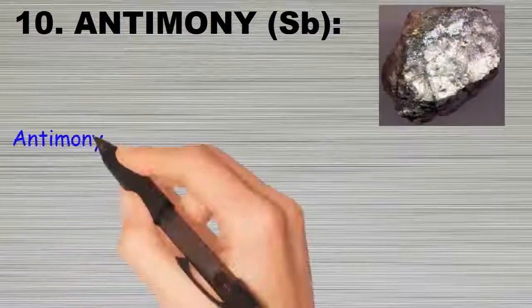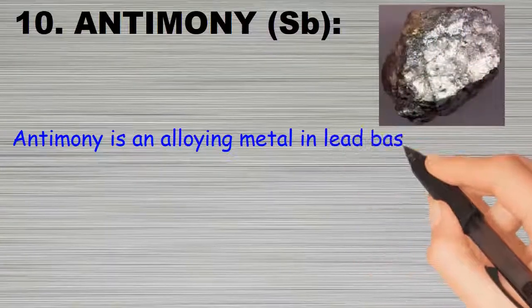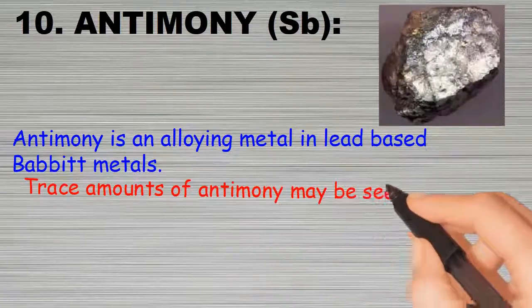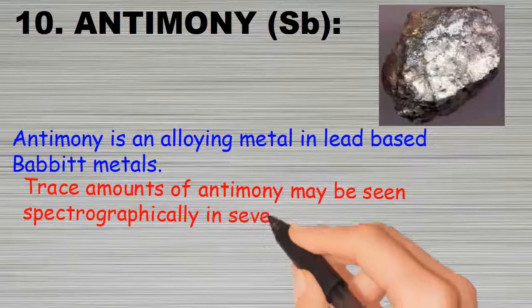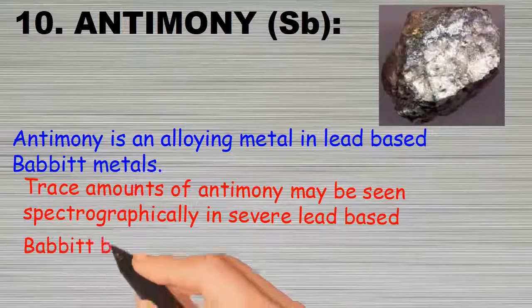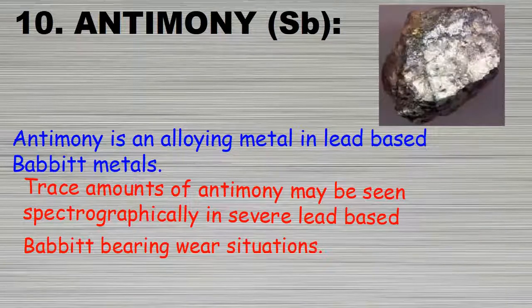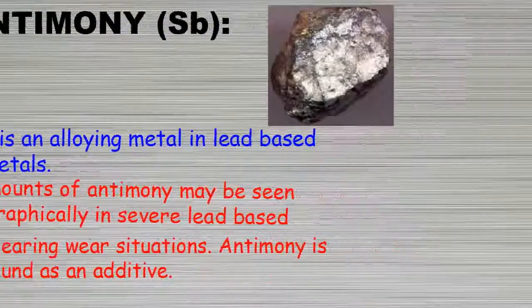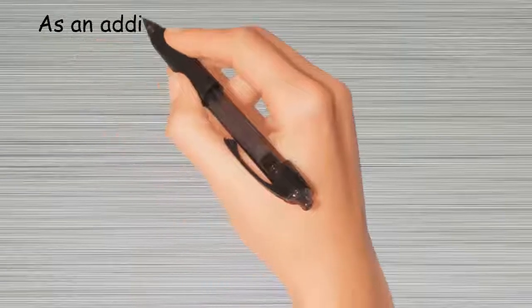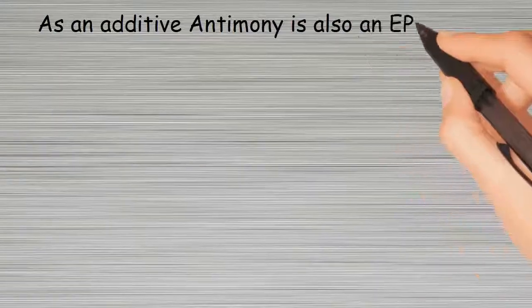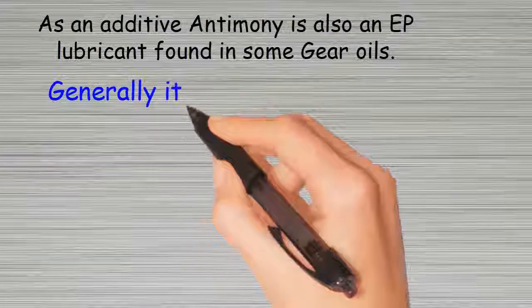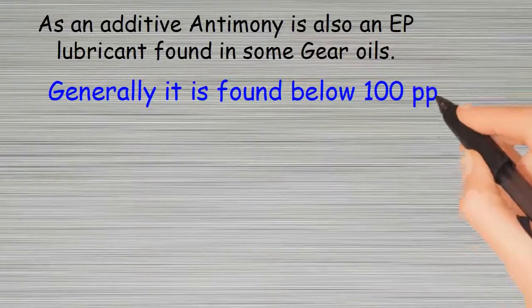Antimony (Sb). Antimony is an alloying metal in lead-based Babbitt metals. Trace amounts of antimony may be seen spectrographically in severe lead-based Babbitt bearing wear situations. Antimony is usually found as an additive; as an additive, antimony is also an EP lubricant found in some gear oils, and is generally found below 100 ppm.